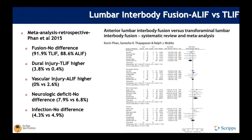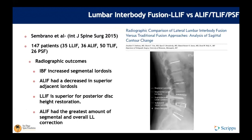A meta-analysis comparing ALIF versus TLIF showed no significant difference in fusion rates. Vascular injuries were higher with ALIF; neurologic deficits and infection rates were similar. However, many such analyses don't closely examine deformity parameters. A lateral versus all other techniques comparison showed ALIF had the greatest segmental and overall lumbar lordosis correction, while lateral was superior for disc height restoration.